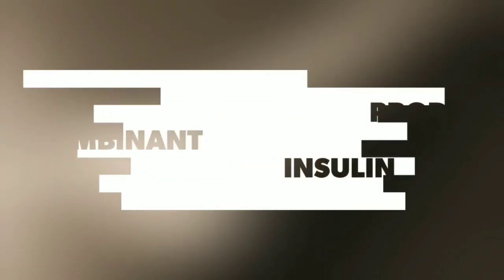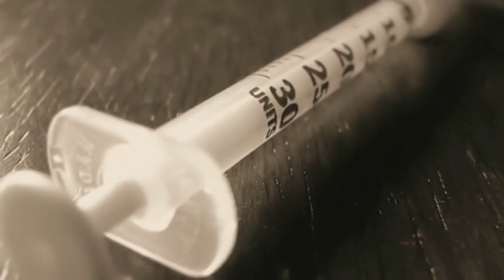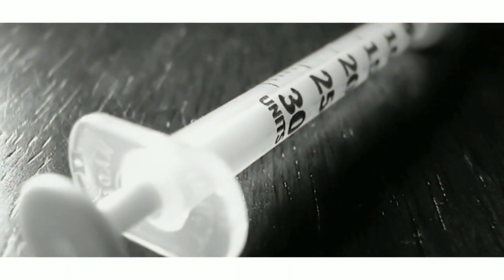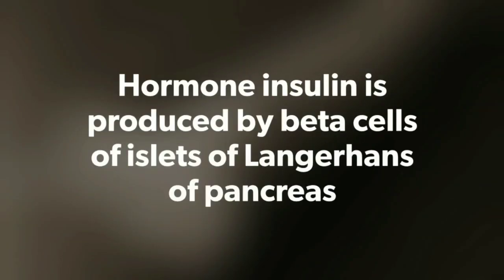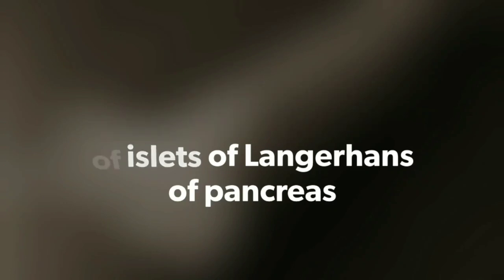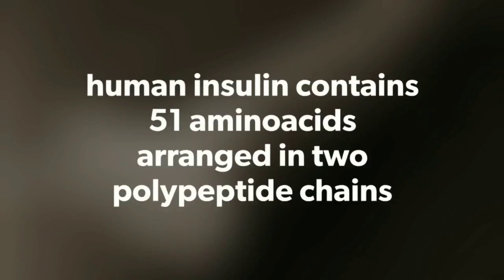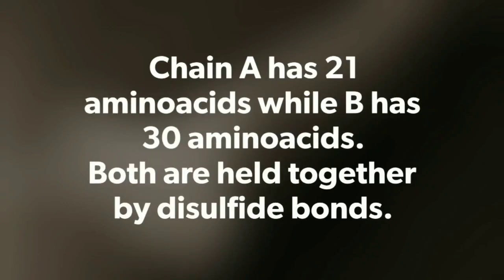Welcome to my channel. Today's topic is production of recombinant insulin. The hormone insulin is produced by beta cells of the islets of Langerhans of the pancreas. Human insulin contains 51 amino acids arranged in two polypeptide chains: chain A has 21 amino acids while chain B has 30 amino acids, and both are held together by disulfide bonds.